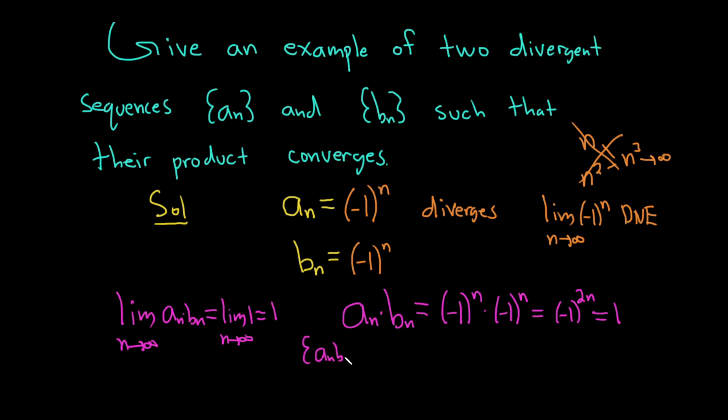So we have a new sequence, a sub n times b sub n, that converges. So we took two divergent sequences and found a product that converges.